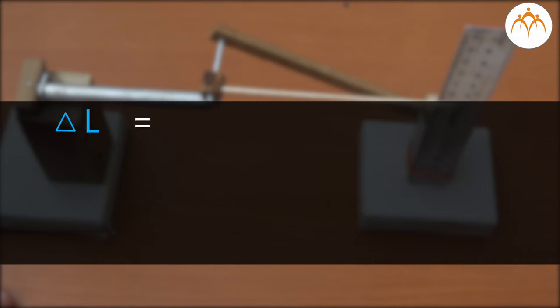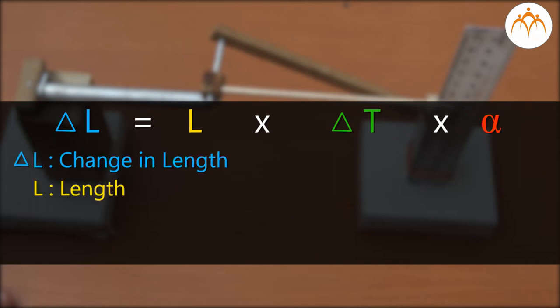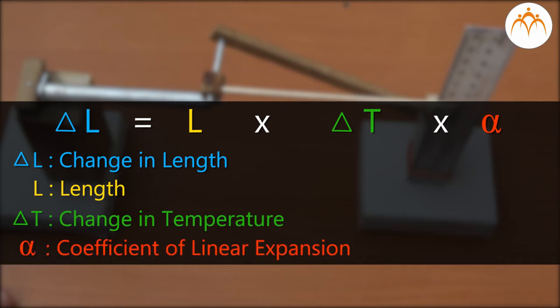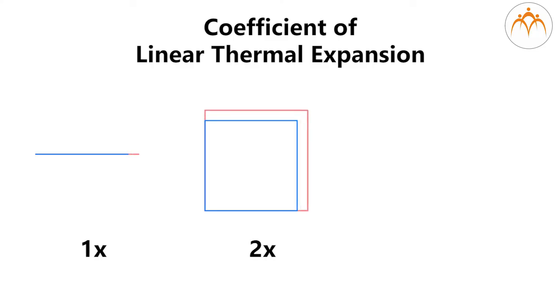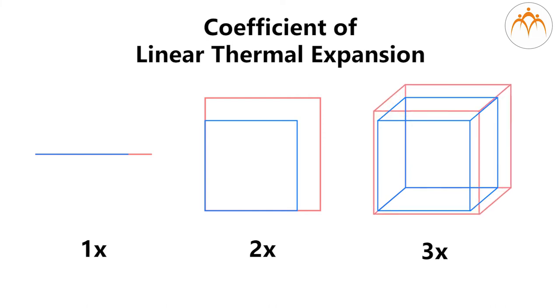Delta L is equal to L multiplied by delta T multiplied by alpha. Change in length is delta L. Length is L. Change in temperature is delta T. Coefficient of linear expansion is alpha. Area will expand twice as much as length and volume will expand thrice as much as length.